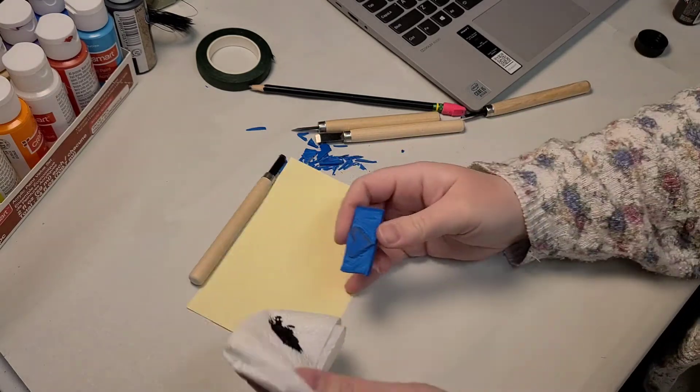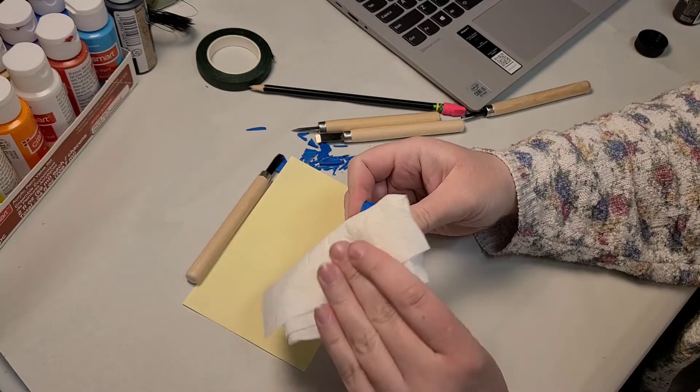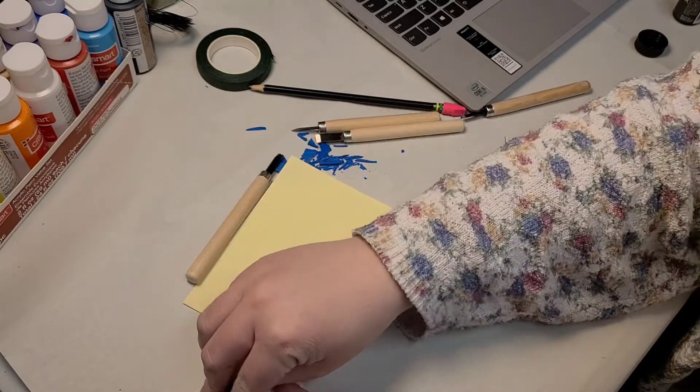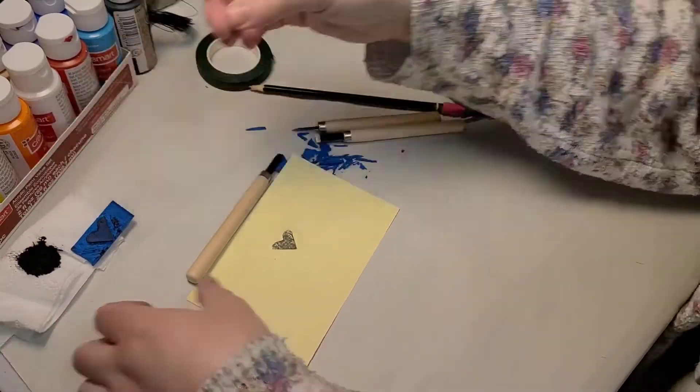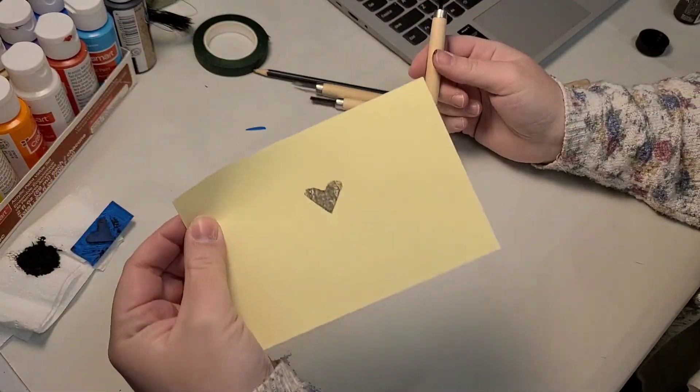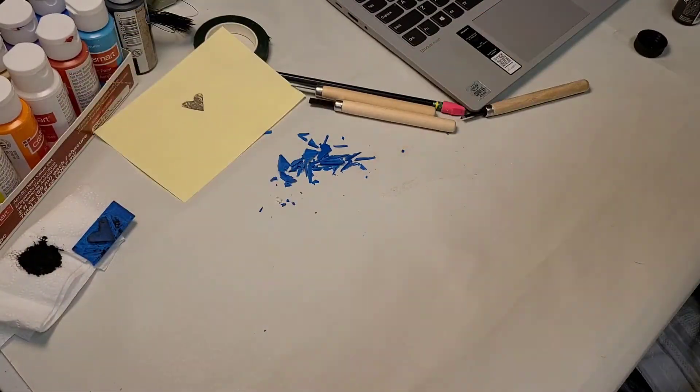I put some ink on a paper towel. Might actually be toilet paper at this point. I'm not sure. Just, you know, like a rag or something. And then, stamp. And that's how it turned out. So, I was pretty excited about that.